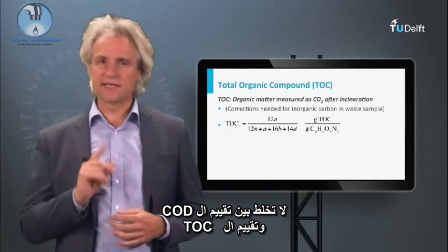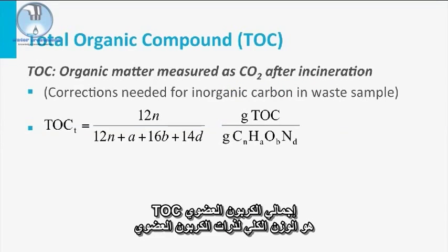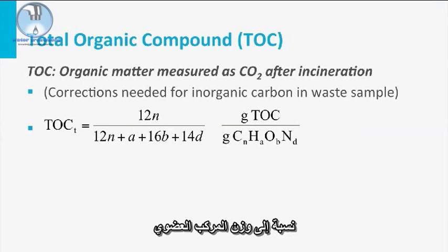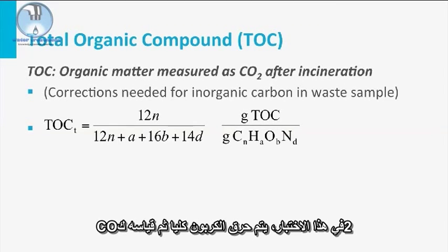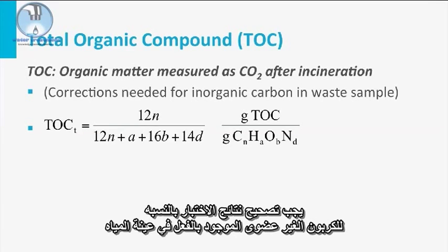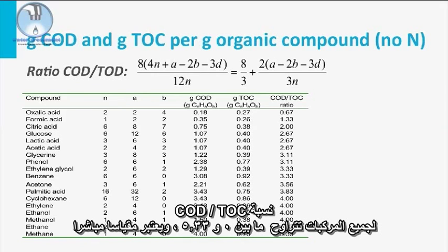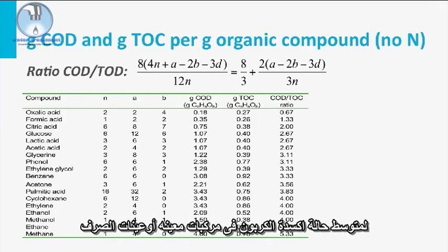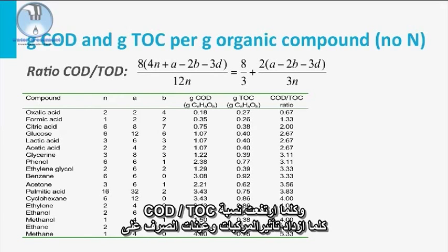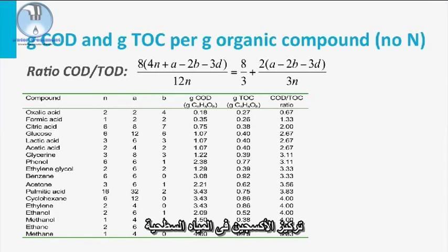Be careful: don't mix up the COD assessment with TOC assessment. TOC stands for total organic carbon, which is the total weight of organic carbon atoms relative to the weight of the organic compound. In this test, all carbon is incinerated after which it is measured as CO2. Test results must be corrected for inorganic carbon already present in a water sample. The COD-TOC ratio for all compounds ranges between 0 and 5.33 and is a direct measure of the average oxidation state of the carbon in a specific compound or waste sample. The higher the COD-TOC ratio, the more impact the compound or waste sample will have on the surface water oxygen concentration.